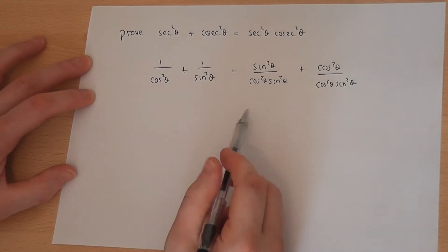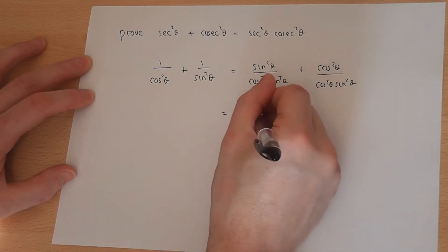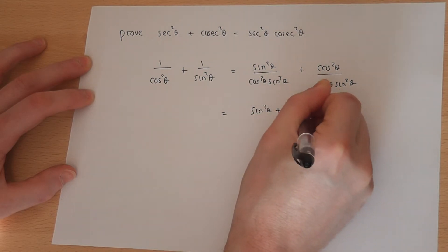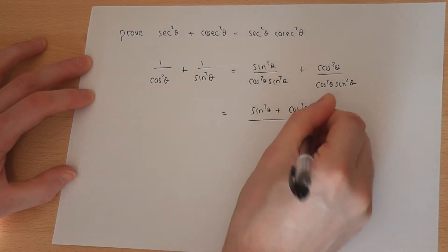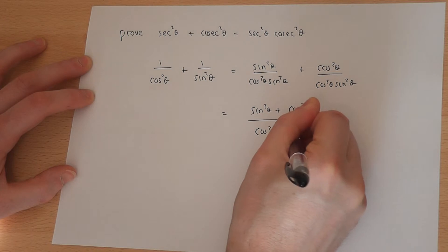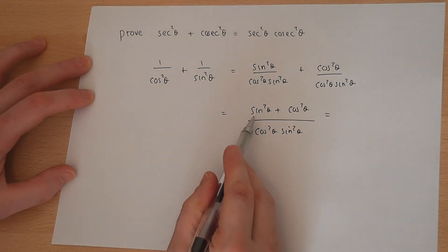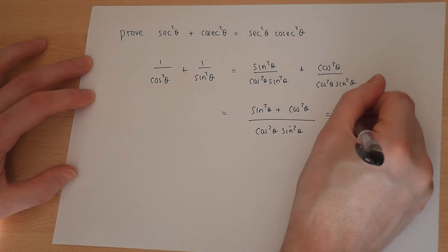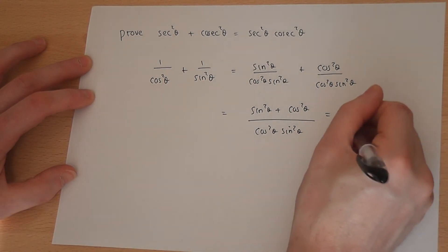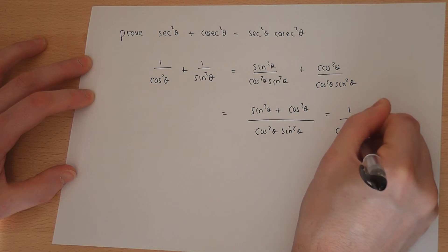The two fractions now share the same denominator, so this becomes sine squared theta plus cos squared theta, all over cos squared theta sine squared theta. Now cos squared theta plus sine squared theta equals 1 — that is the fundamental identity. So it's 1 over cos squared sine squared.